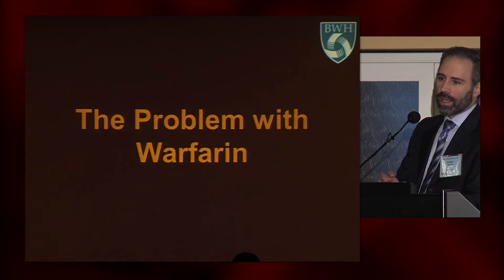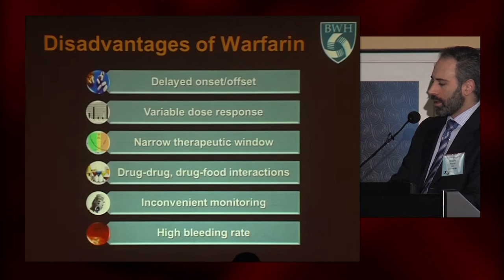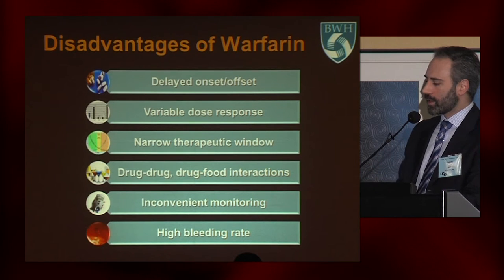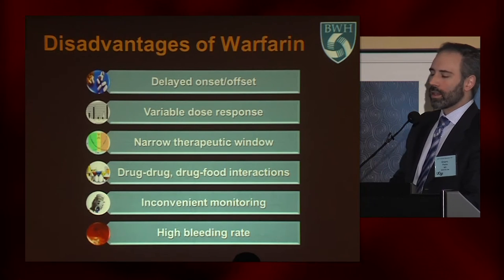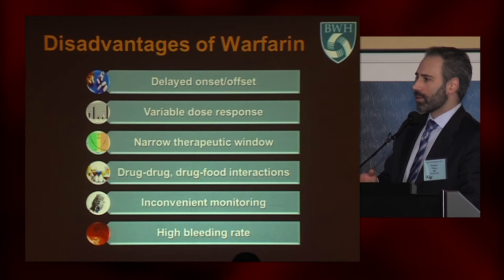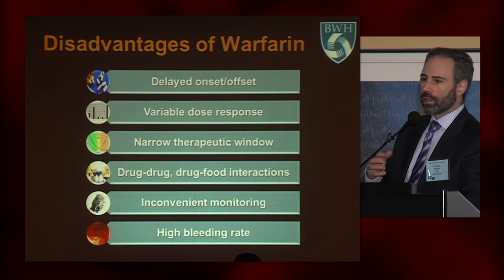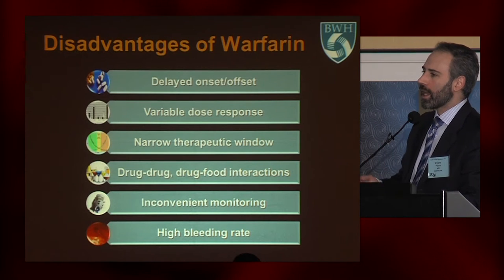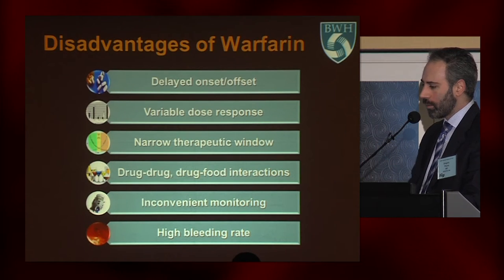We can't discuss anticoagulation without focusing at least for a little while on warfarin. Warfarin has some distinct advantages — it's cheap and it's proven the test of time. But what we spend most of our time thinking about are the disadvantages: the delayed onset and offset, the variable dose response. You can have a 280-pound young football player who only needs five milligrams, and then an 80-year-old 100-pound woman who needs 30 milligrams per day. You can't look at someone and pick the dose.